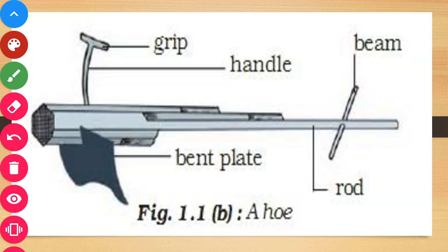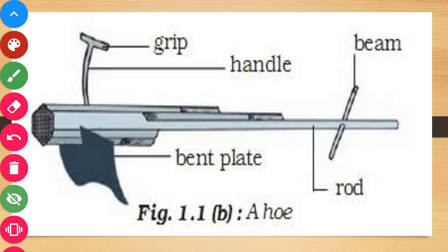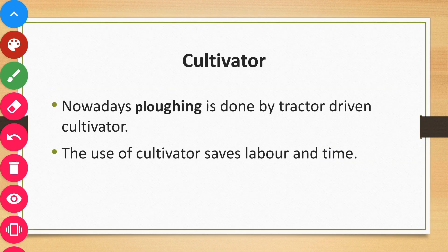This is the shape of the Hoe. The first part is the rod-shaped structure made up of wood or iron, and the second part is a bent plate made up of iron. This blade portion mainly helps to loosen the soil.